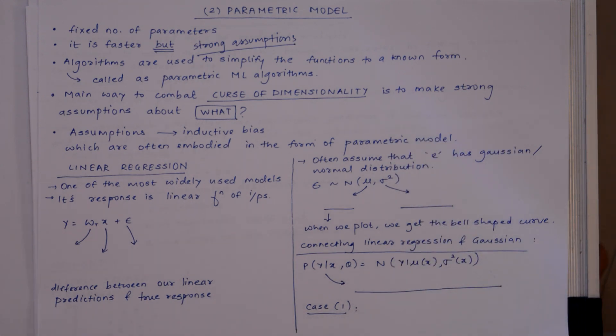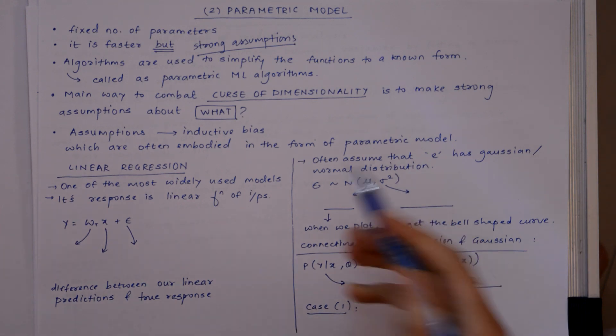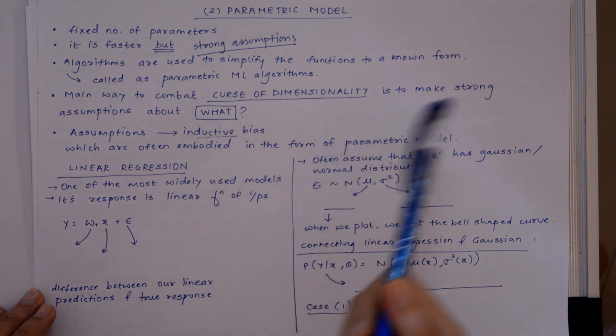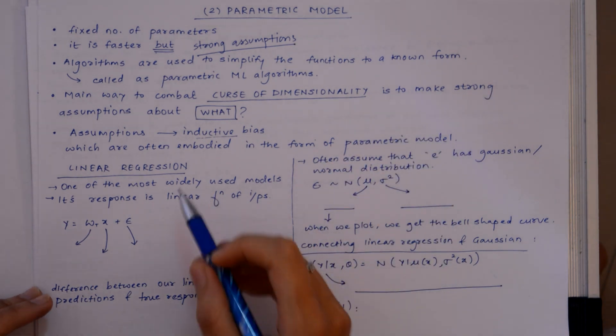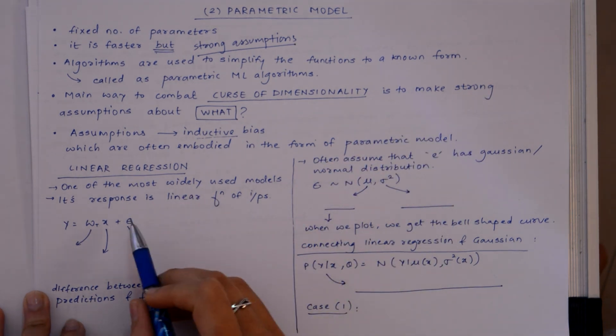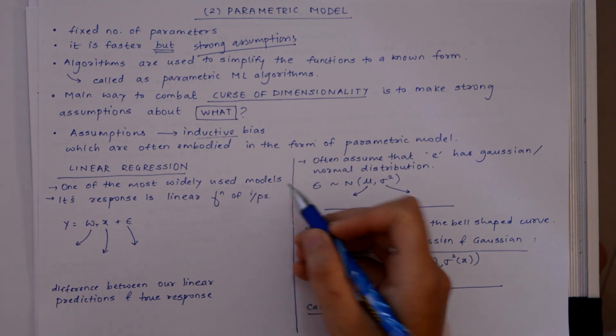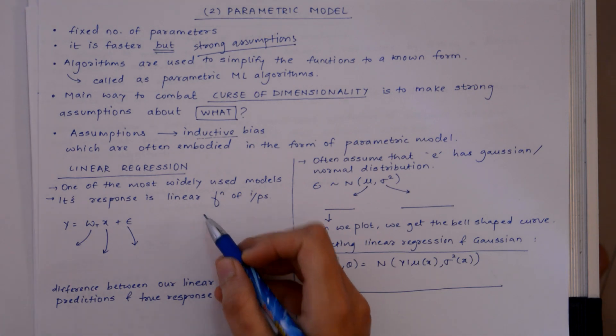We have inductive bias, and one of the type of parametric model is linear regression. This is one of the most widely used models.